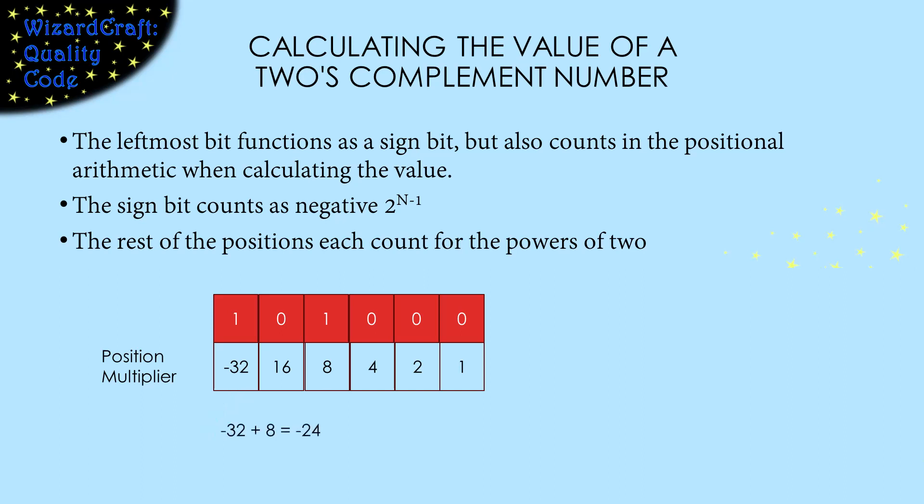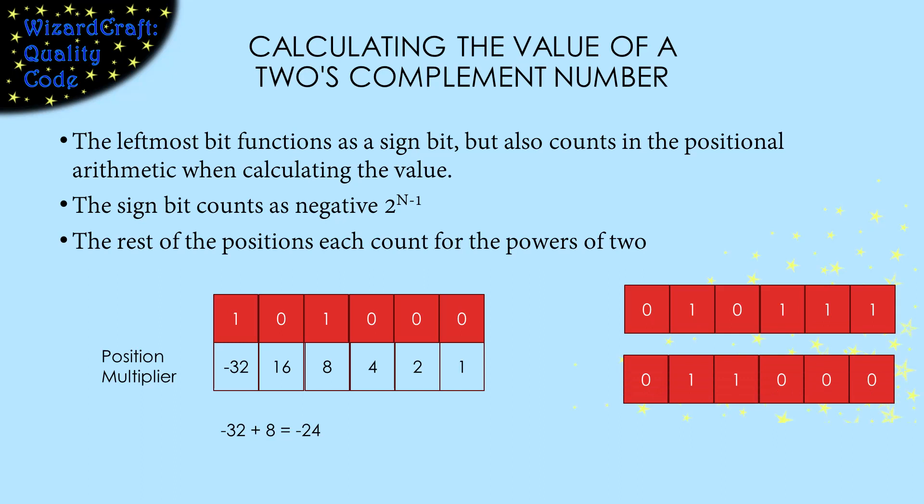So, for this example, positional math would say that the value of this number is negative 32 plus 8, which is negative 24. I could also figure out its value by negating to see what its positive magnitude is. I negate it by flipping all the bits and then adding 1. The result is 24. So, my original number was negative 24. I'm glad those match.